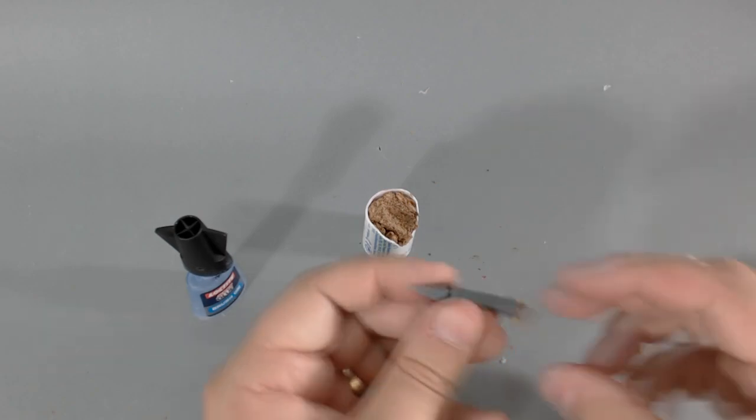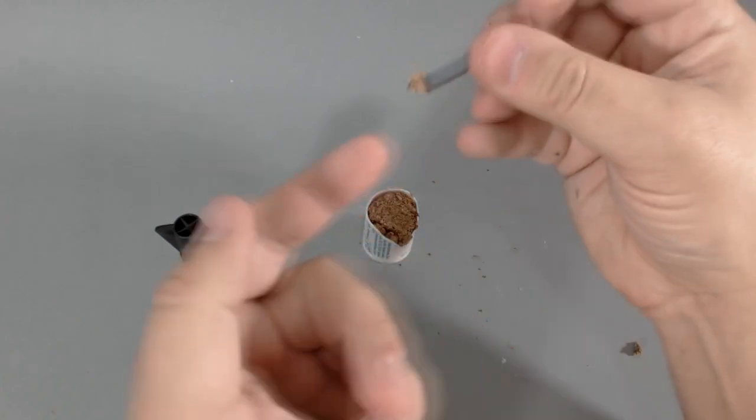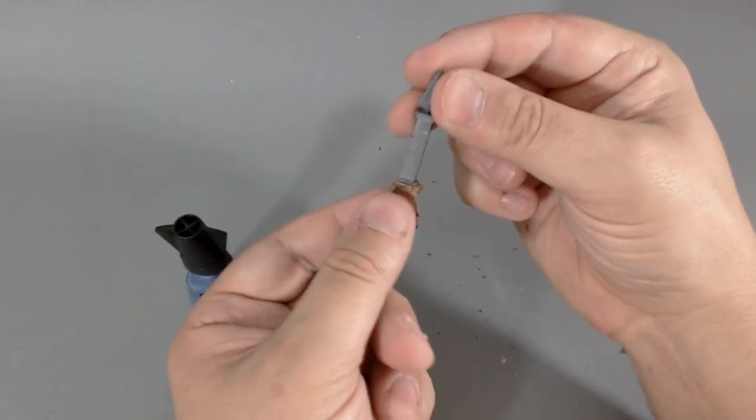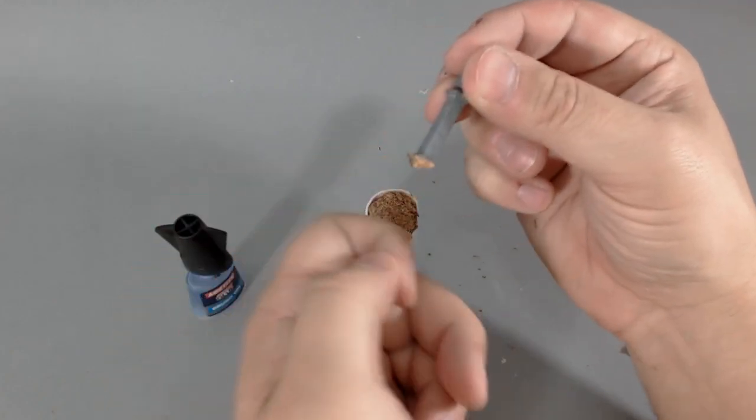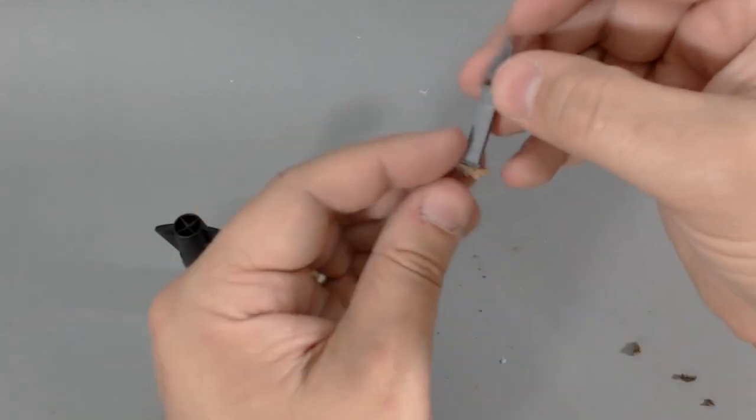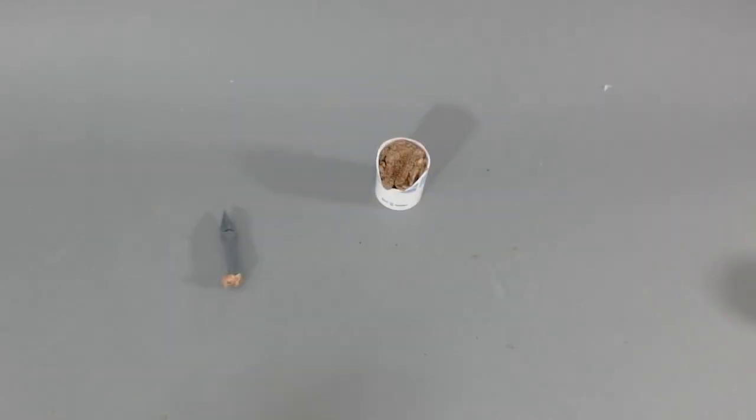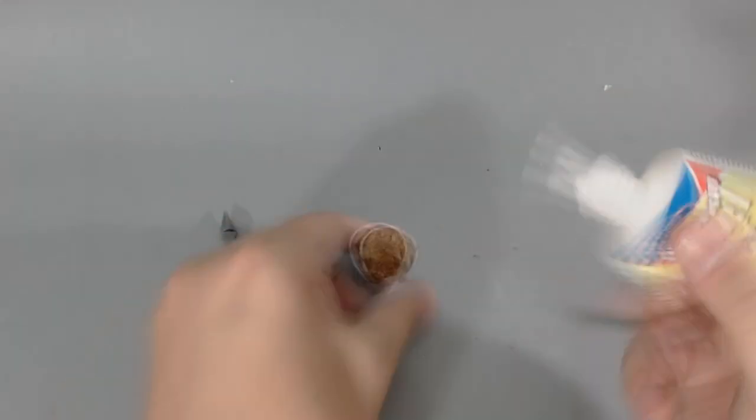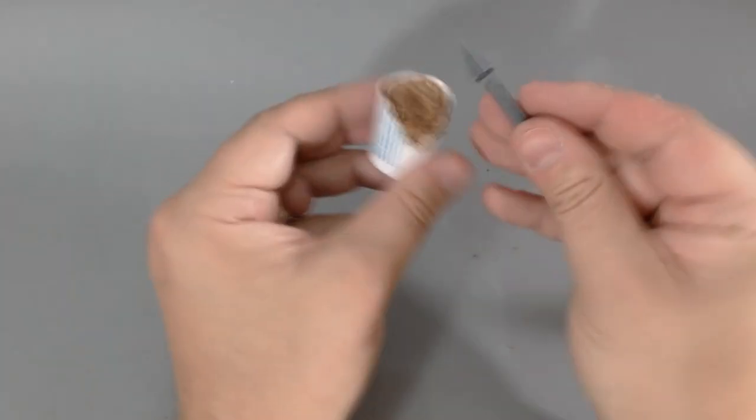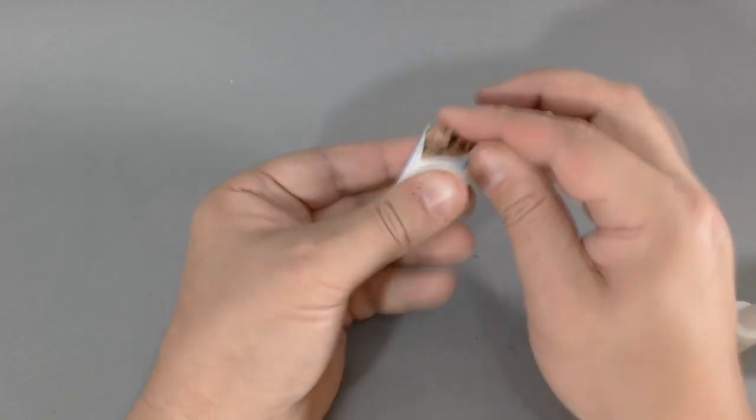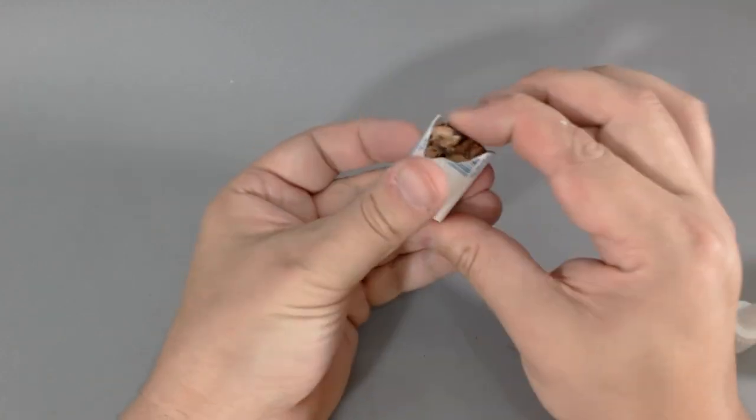So I think that's looking pretty good, so we'll just glue that in place now. We'll just hit some glue in that groove we cut earlier, place it in there. Once we're happy with the position, we'll just give it a quick squirt of the accelerator, make the glue set straight away, and we're good to go.